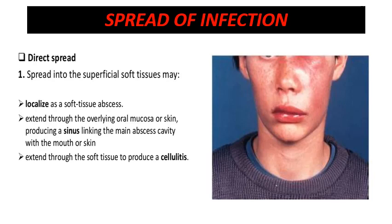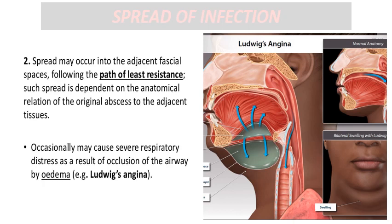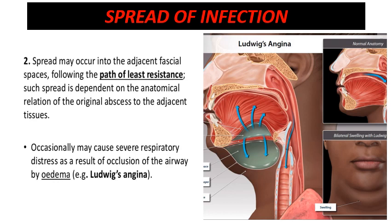If direct spread happens, it may lead to a localized soft tissue abscess extending from the overlying mucosa or skin. If left untreated, it may lead to a draining sinus linking the abscess cavity to external skin or oral mucosa. Without sinus formation, it may spread through soft tissue leading to facial cellulitis. Pus spread always seeks the path of least resistance, and in rare cases, bilateral involvement of submandibular and sublingual spaces leads to the serious condition known as Ludwig's Angina.